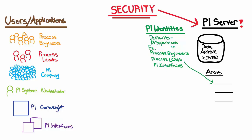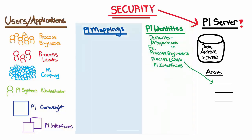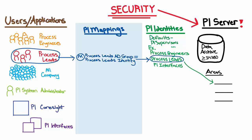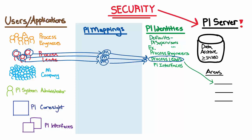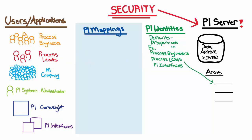We also need a way to link these Windows groups or accounts to their corresponding PI identity, and this is exactly what mappings do. In a mapping, we are simply stating that this Windows Active Directory group or account equals this PI identity. You can see that leveraging groups is going to make things easier to set up and maintain. If I wasn't using a group, for example, I would have to create three different mappings for the process engineering leads instead of just a single mapping for the group.